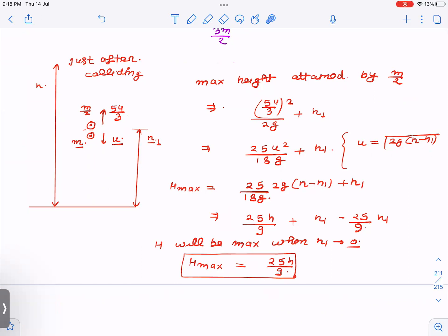And then I'm getting 25h/9 plus a negative term in h₁. Now if I want to maximize H - this h₁ is the place where collision is happening. So this equation is very clearly telling us that if h₁ is 0, then the max height will be 25h/9.